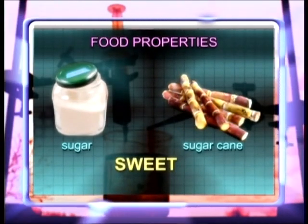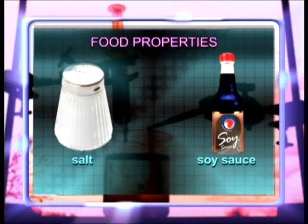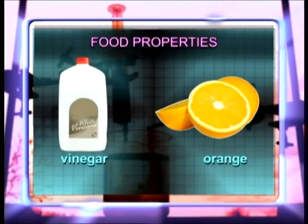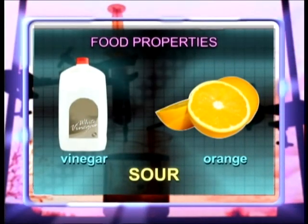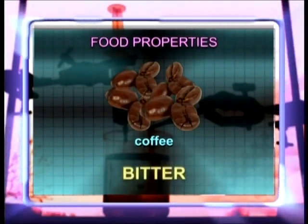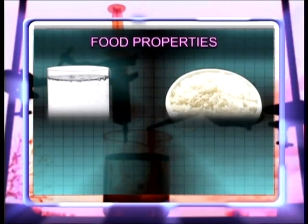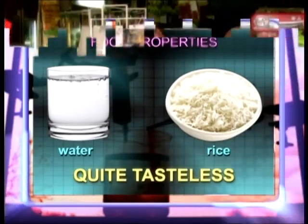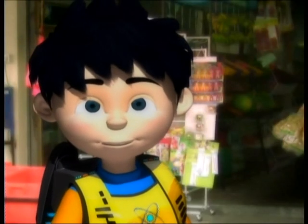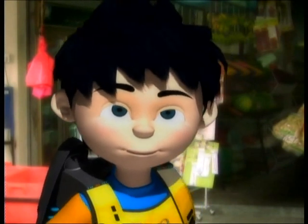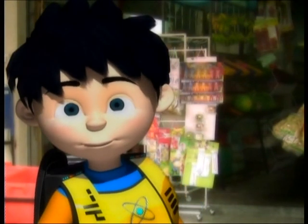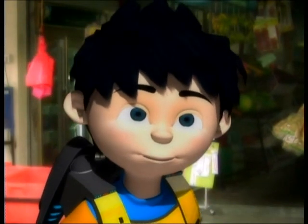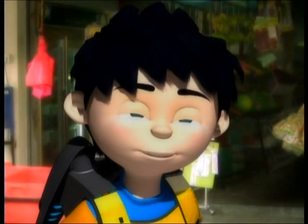Sugar and sugarcane taste sweet. Salt and soy sauce taste salty. Vinegar and orange taste sour. Coffee tastes bitter. Water and rice are quite tasteless. All these food items have their own chemical properties. The chemical properties of food are determined by the amount of acid or alkali in them.